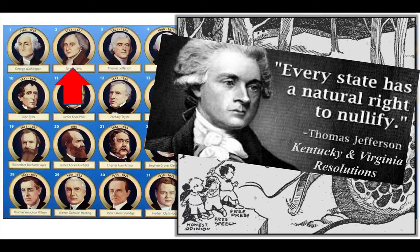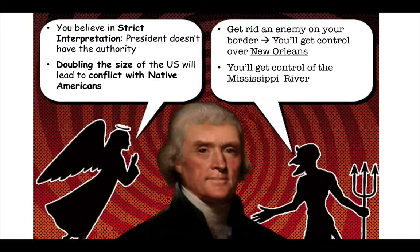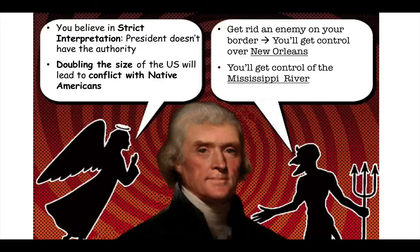Adams is no longer president. Thomas Jefferson has won the election. We can't talk about Thomas Jefferson without talking about the Louisiana Purchase. As you remember from the graphic, there were some pros and cons about whether or not he should take it. But even though buying the land violated his personal principles of strict interpretation, there was no way Jefferson was going to say no to buying this land.